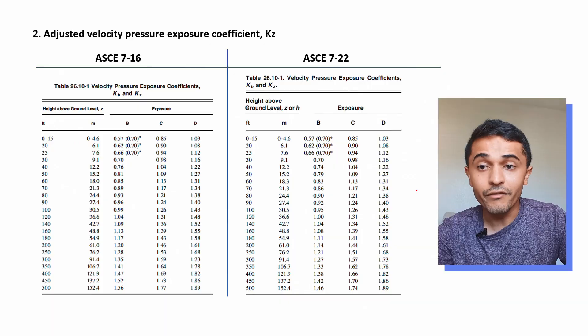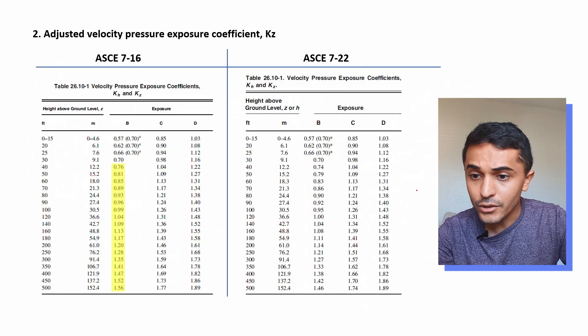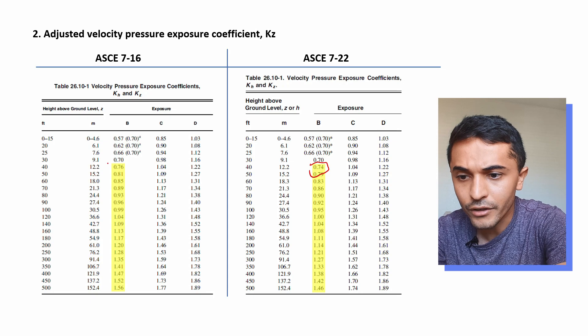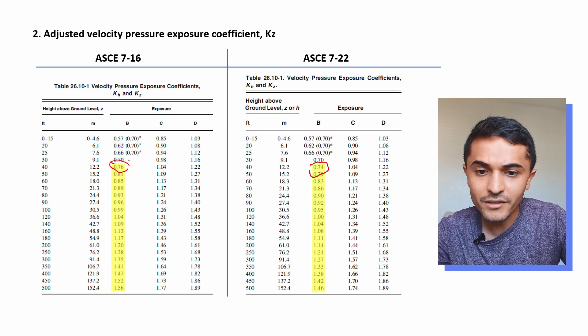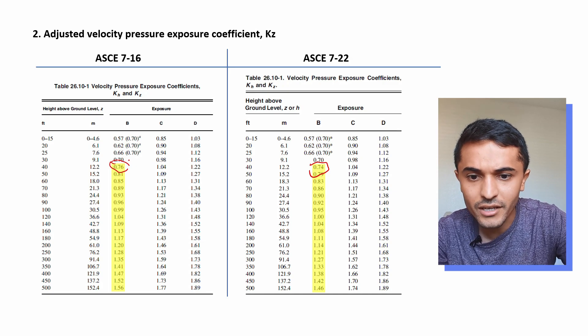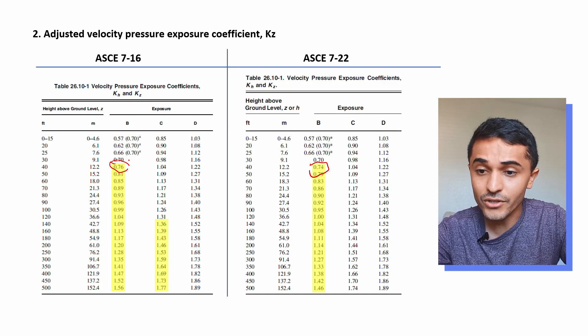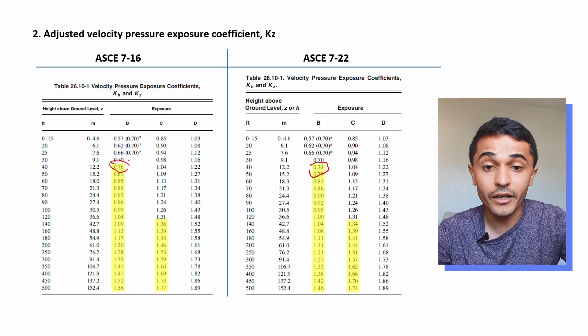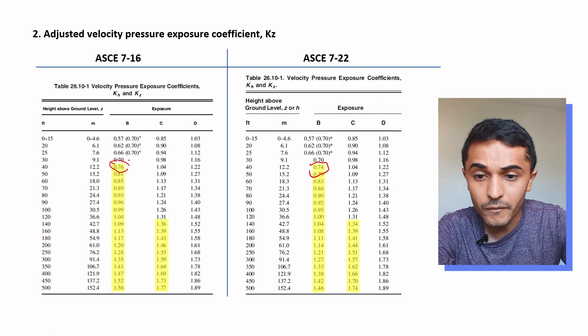The second change is for the velocity pressure exposure coefficient KZ or KH. There isn't a whole lot of change in magnitude, but for Exposure B starting at height 40 feet it decreased — from 0.76 to 0.74, from 0.81 to 0.79, and so on. For Exposure C, buildings with height starting at 140 feet also decreased slightly. No changes were made for Exposure D. So for low-rise buildings less than 40 feet in height, nothing really changed.